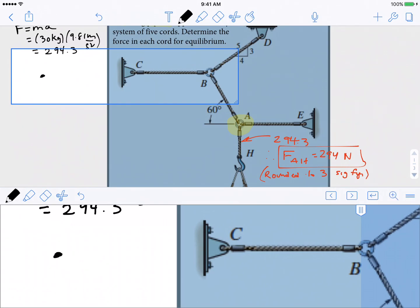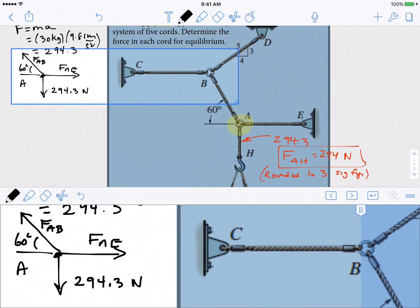A free body diagram of A is representing what A is feeling. So A is feeling a pulling down motion, a force of 294.3 newtons. It is also feeling support from the wall, and I'm going to call that force FAE. And finally, it is also feeling support going off in that direction with a force that I'm going to call FAB, because it goes from A to B.